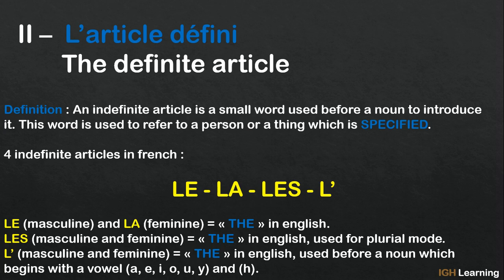For the definite article we have four forms: le, la, les, and l'apostrophe. Le and la are the equivalent of 'the' in English. You use le for masculine words and la for feminine words. Then you have les, which is used for both masculine and feminine plural words, and its equivalent is also 'the'.